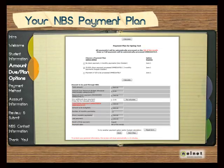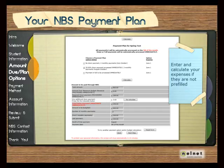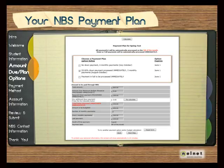You are now on the Amount Due Plan Options page. If the expense box is not pre-filled, enter and calculate your expenses. Once you have calculated your tuition, scroll down to the Payment Plan Options and select the option that best fits your needs. If only one plan option is displayed, select it by clicking in the box next to the Payment Plan option.